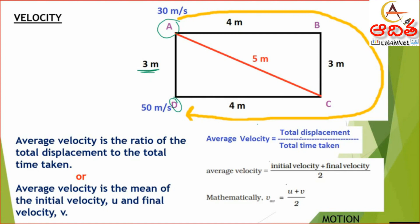For speed, average speed, velocity, and average velocity, the units are the same — that is meter per second. Average velocity can also be calculated as initial velocity plus final velocity divided by 2, which is the mean of the two. Here, initial velocity U is 30 m/s and final velocity V is 50 m/s, giving average velocity as (30 + 50)/2 = 80/2 = 40 meter per second.